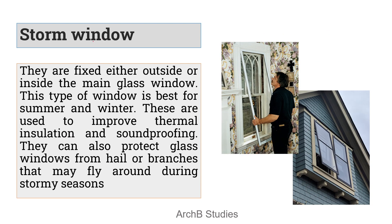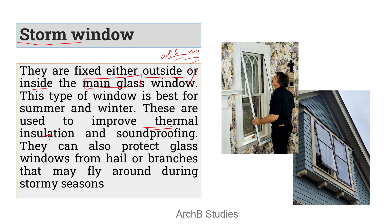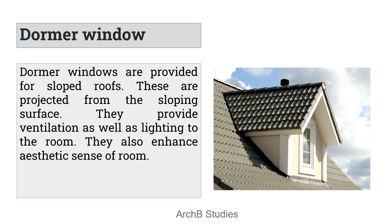Next is the storm window. Storm windows are fixed outside or inside the main glass window — they are an add-on to the main glass window. The purpose of these windows is to improve thermal insulation, sound proofing, and to protect the glass window from hail or branches that we mostly see during stormy seasons.